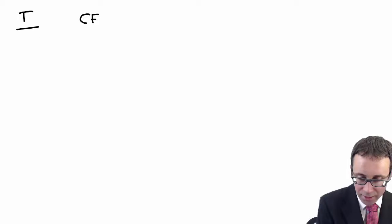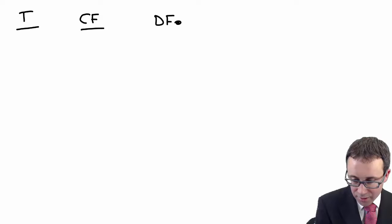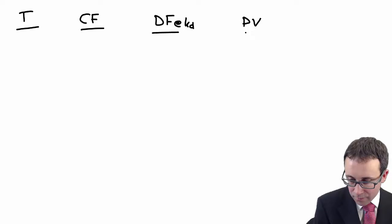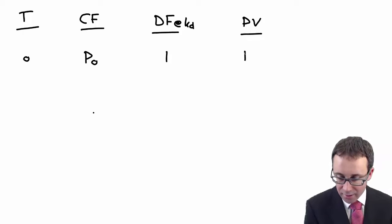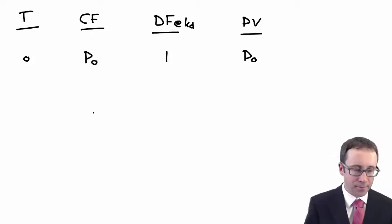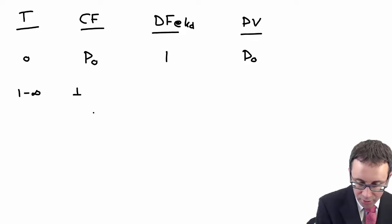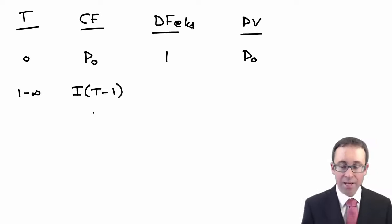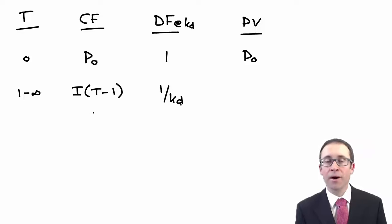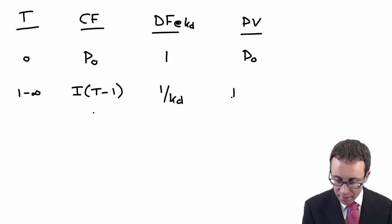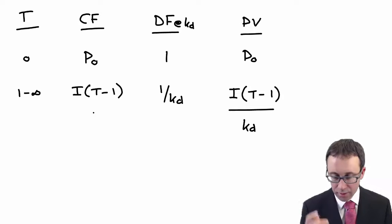KD is the IRR of the cash flows. So what you've got is if I go through and take my time period, then look at my cash flows, my discount factor, which is at the cost of debt, and my present value. At T0, I have my cash flow at P0 and my discount factor at T0, as always, is one. From T1 to infinity, I have my interest multiplied by the tax charge less one divided by the cost of debt.